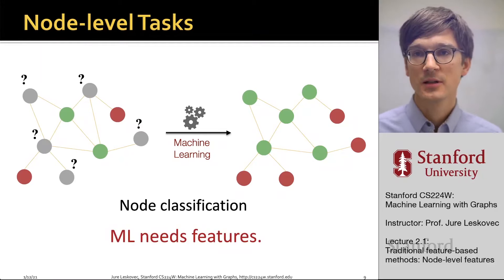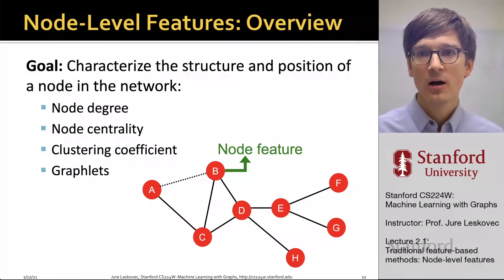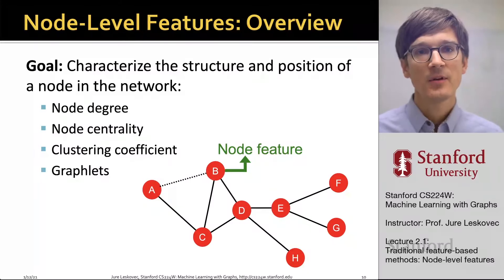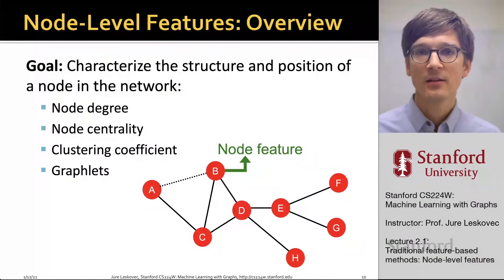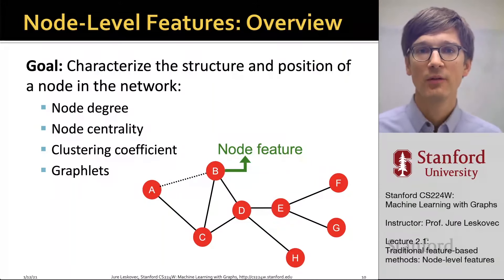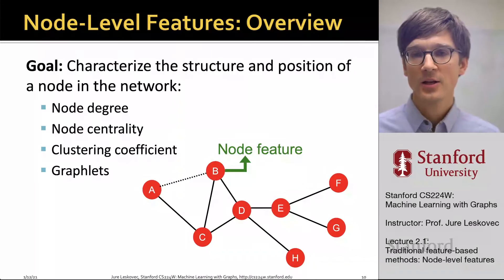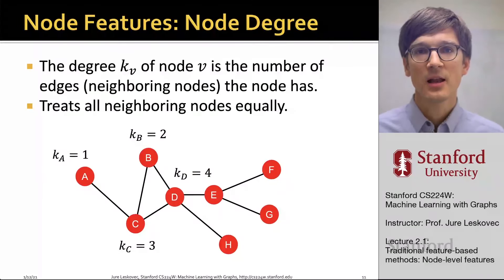We need features that will describe this particular topological pattern. The goal is to characterize the structure of the network around a given node as well as the position or location of the node in the broader network context. We are going to talk about four different approaches: first, we can use the degree of the node; then we can think about node centrality measures; then we will talk about characterizing the local network structure, specifically clustering coefficient; and then we will generalize this to the concept known as graphlets.